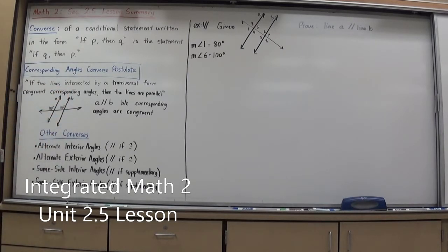And that's what we'll be doing proof-wise is proving lines are parallel via this. Now because of this rule, there are a lot of other converses that then arise from it. The alternate interior angles converse, which is if the alternate interior angles are congruent, the lines must be parallel.